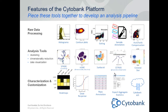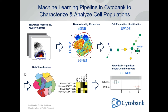In addition to these machine learning algorithms available in Cytobank, we also have a variety of other features to help with your whole analysis workflow — raw data processing tools, different analysis tools, tools to help with cell sample and subset characterization, and the ability for analysis customization. The idea is that you can piece these tools together to develop an analysis pipeline that works to meet your scientific goals and your particular data type.